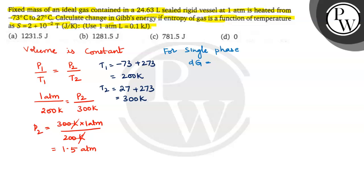D change in the Gibbs energy is equal to V dP minus S dT. D change in the Gibbs energy is equal to V dP minus S dT.